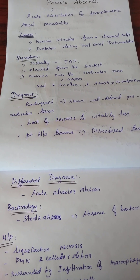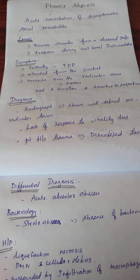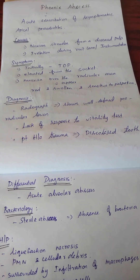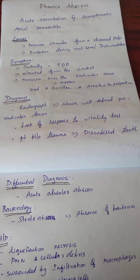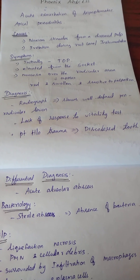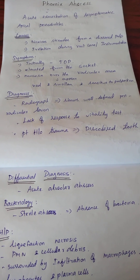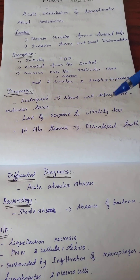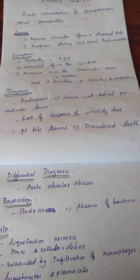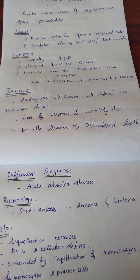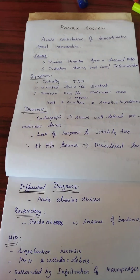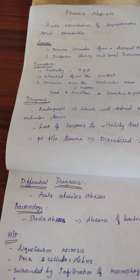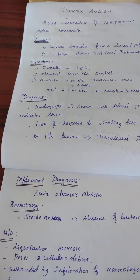For diagnosis, radiograph shows a well-defined periradicular lesion. If it were acute alveolar abscess, there would be no radiographic changes. But in this case, radiographic changes are seen, so we diagnose acute exacerbation of asymptomatic apical periodontitis. There is lack of response to vitality test due to pulpal necrosis, though sometimes electrical pulp test shows a response because of fluid in the root canal or in a multi-rooted tooth.